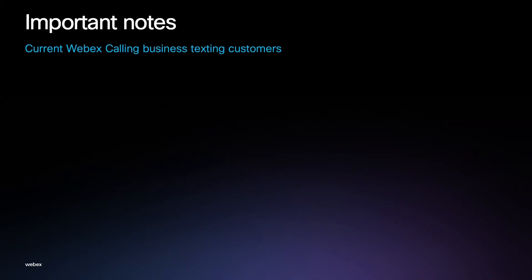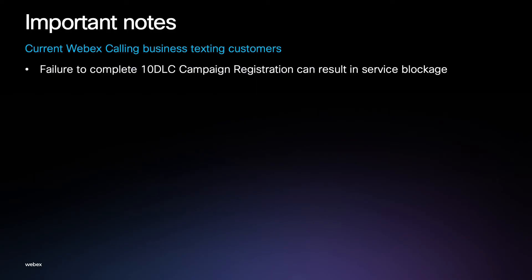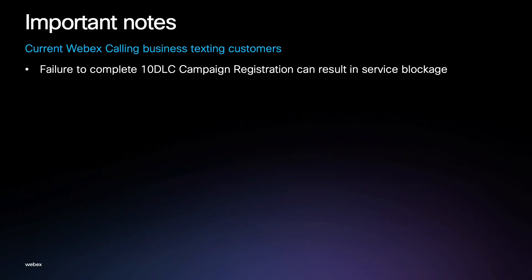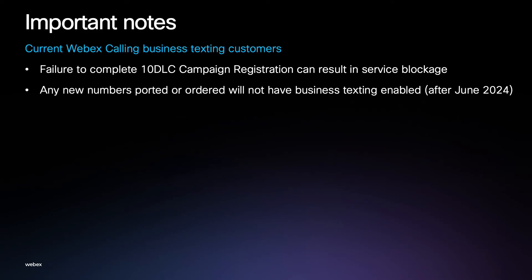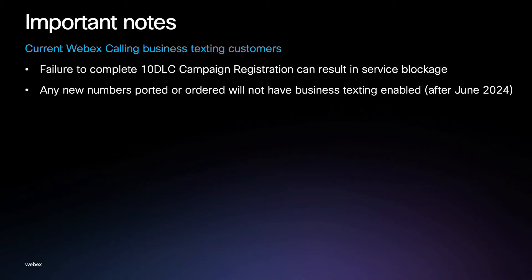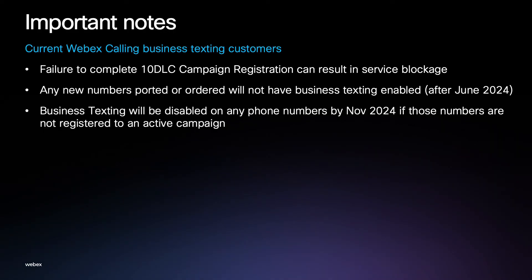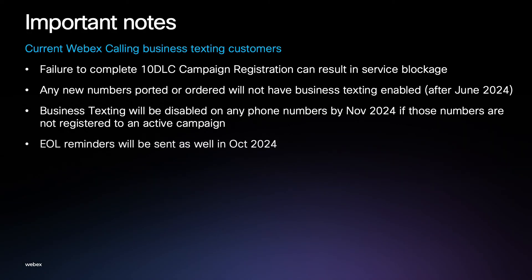There are a few important notes to remember about 10DLC campaign registration. For current Webex Calling business texting customers, the failure to complete 10DLC campaign registration can result in service blockage. Any new numbers, ported or ordered, will not have business texting enabled after June 2024. Business texting will be disabled on any phone numbers by November 2024 if those numbers are not registered to an active 10DLC campaign. End of life reminders will be sent in October 2024.